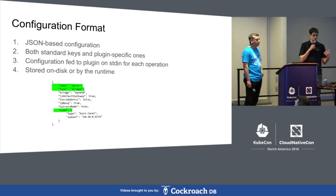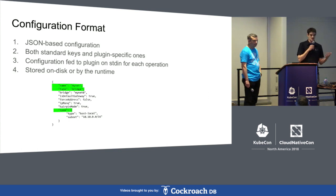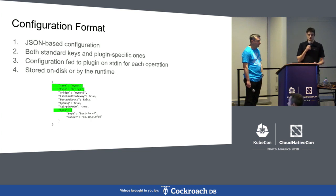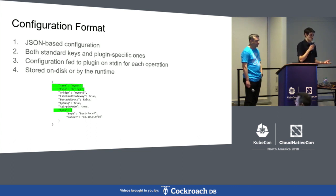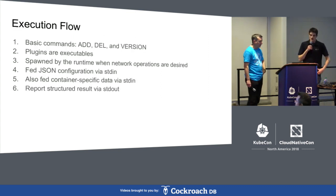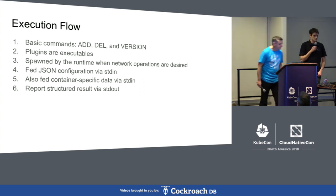This configuration is fed to each CNI plugin operation — when CNI runs the network plugin for a given operation, this JSON is sent to the plugin so it can figure out exactly what it's supposed to do. This configuration can be stored on disk, and that's often how it's used. In Kubernetes, by default there's a file in /etc/cni/net.d that describes the plugin you want to use for your container operations. But it doesn't have to be — it can be stored anywhere. All the CNI specification requires is that the runtime sends the configuration in the standard format to the plugin in a specific way.